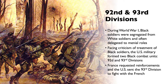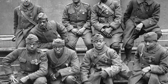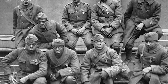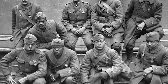During World War I, Black soldiers were segregated from white soldiers and often delegated to menial roles like transporting materials or digging trenches. Receiving criticism over the treatment of Black soldiers, the U.S. military formed two Black combat units called the 92nd and 93rd Divisions. France requested reinforcements and the U.S. sent the 93rd Division to fight alongside the French.